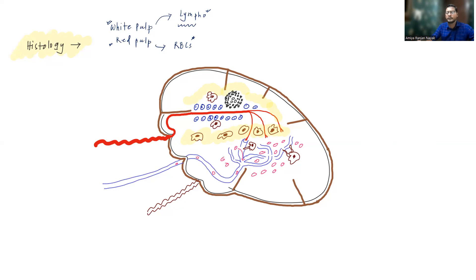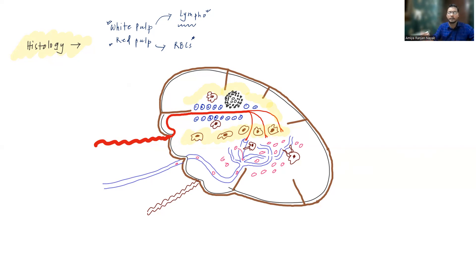If you see a spleen cut section, you will find multiple white pulp areas and diffusely present red pulp. For simplification, I have drawn a schematic diagram showing one white pulp and a small area of red pulp, but spleen will have multiple white pulps and diffusely present red pulp.